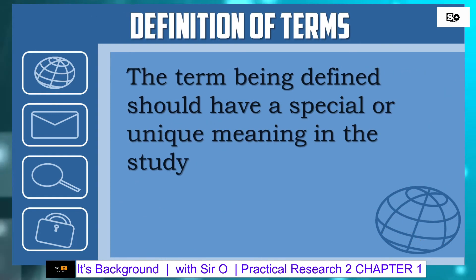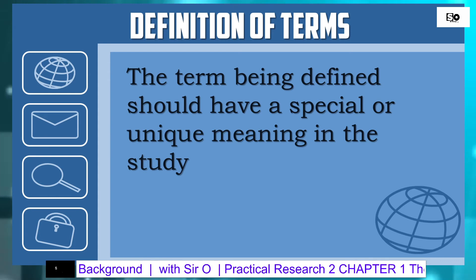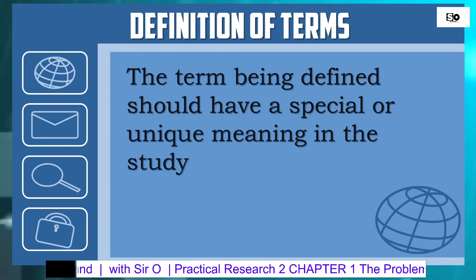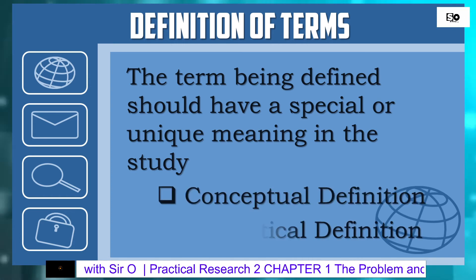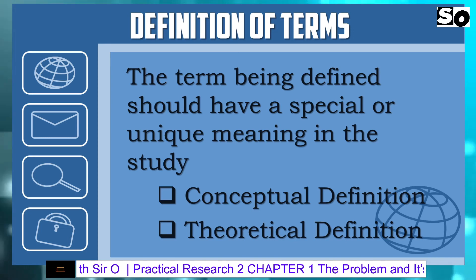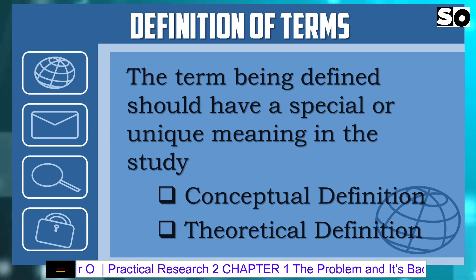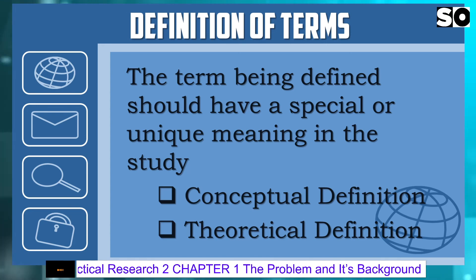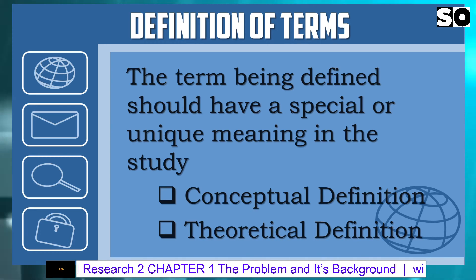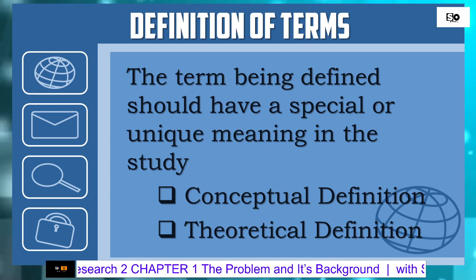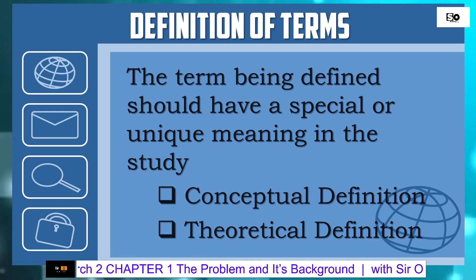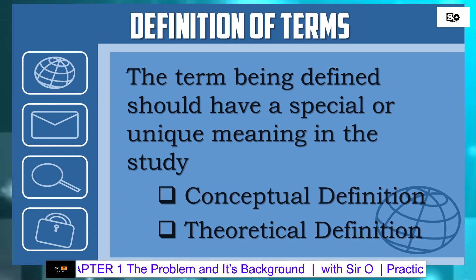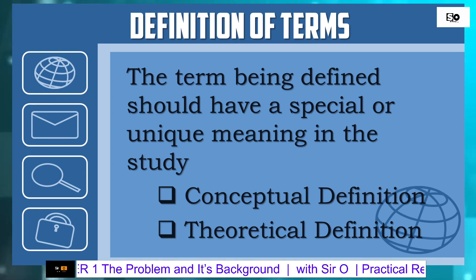Definition of terms. The term being defined should have a special or unique meaning in the study. We have two types of definition: the conceptual definition and the theoretical definition. Conceptual definitions are based on how the researcher may develop their own definition from the characteristics of the term defined, while theoretical definitions are taken from encyclopedias, books, magazines, newspaper articles, dictionaries, and other publications.